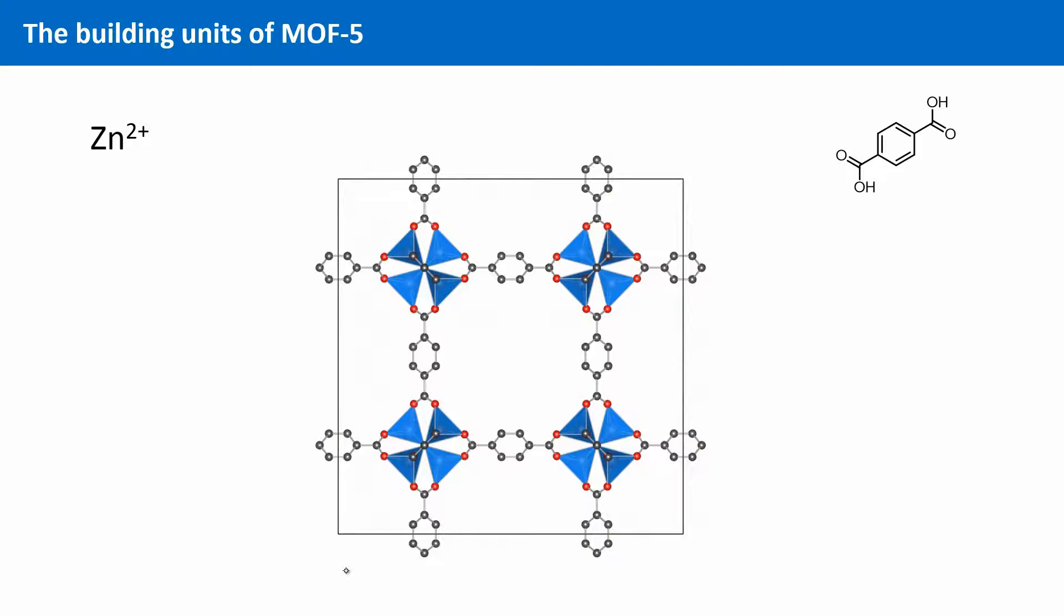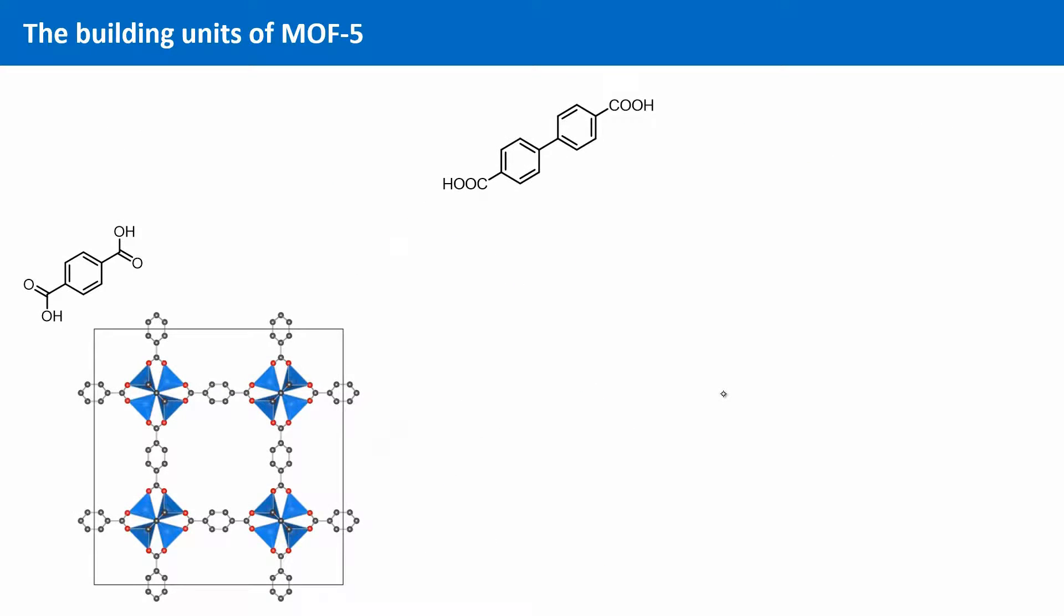Now what will happen if we leave the inorganic secondary building unit as it is and just vary the organic secondary building unit? There are plenty of alternatives available.